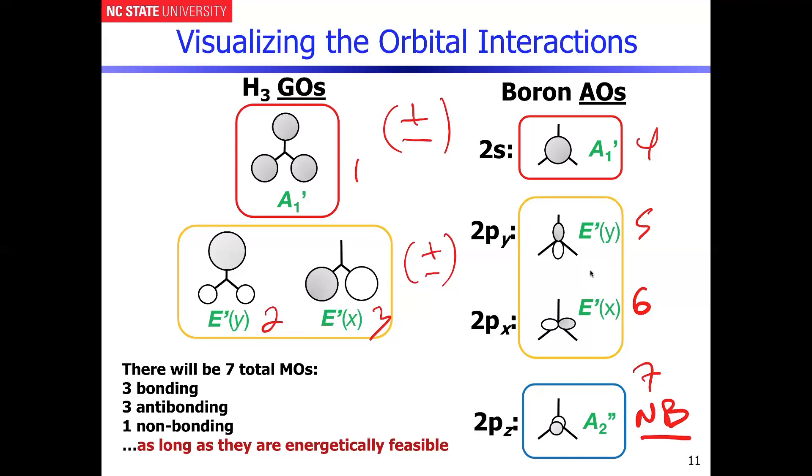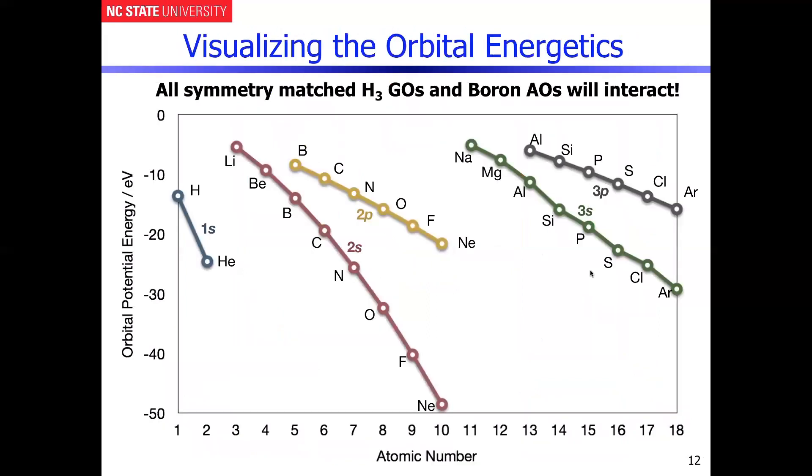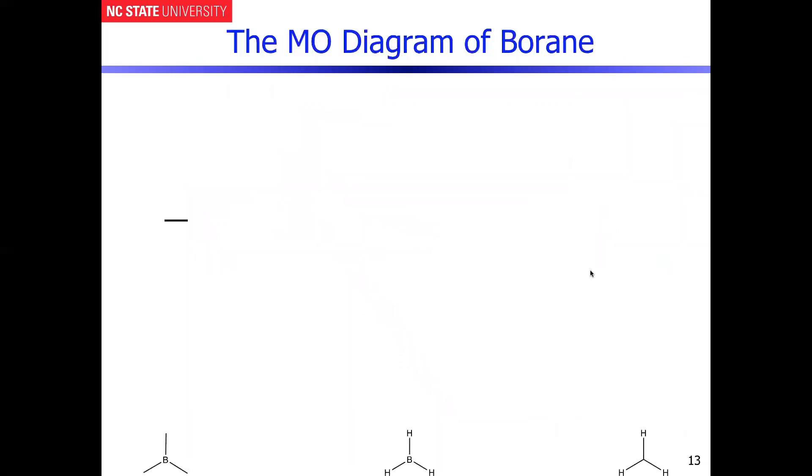We're going to have seven total molecular orbitals. And then we can see how well everything is going to come together based on their energetics. In this particular case, all of the symmetry match H3 group orbitals and boron atomic orbitals will interact energetically. This can best be depicted on a molecular orbital diagram.